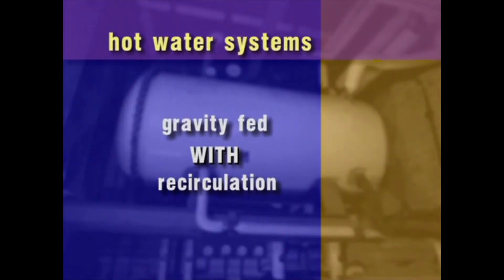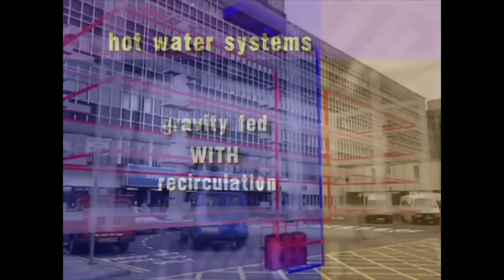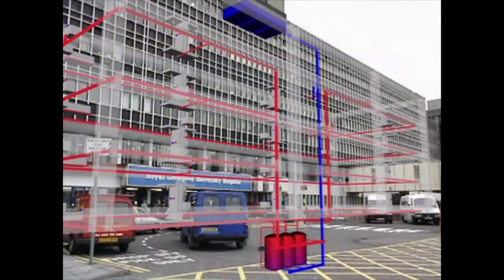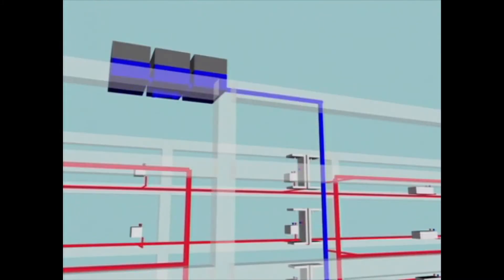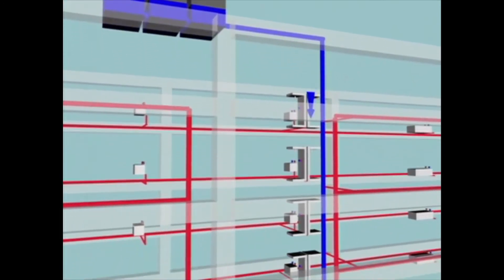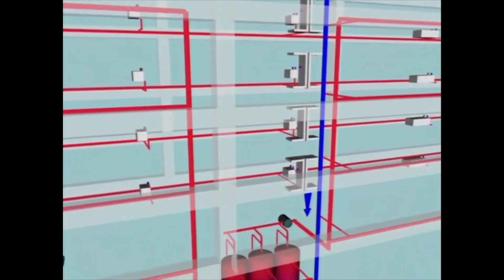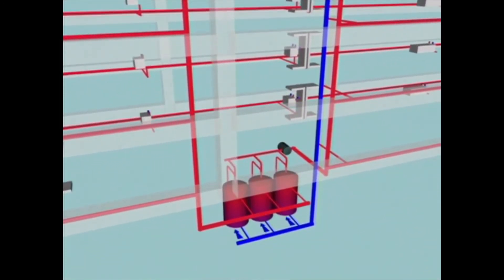A gravity system with recirculation is operated by hospitals, hotels and most commercial buildings. Cold water is stored at a high point within the building or on the roof. There are often multiple cold water tanks feeding into multiple calorifiers which are usually sited in the basement.